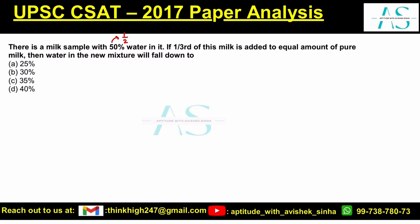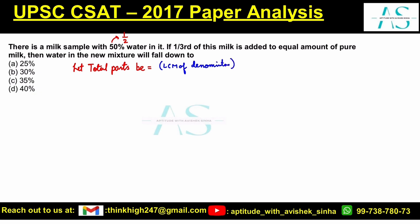Now in this question, how many parts will you assume? Let the total parts be the LCM of the denominators. We have denominators as two and three, so the LCM of two and three is six. So in total, there are six parts.